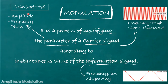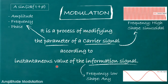A sinusoidal signal can be represented mathematically by the equation A sin(2πft + φ), where A, f, and φ are the amplitude, frequency, and phase — the parameters of a sinusoidal signal. In modulation, at any one time, one parameter is made to vary while the other parameters are kept constant. These parameters vary according to the instantaneous value of the information signal.